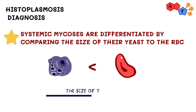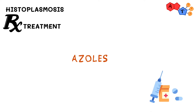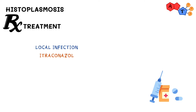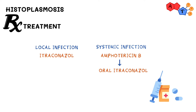For treatment of histoplasmosis: the most commonly used azole is itraconazole for local infections. For systemic infections, we give IV amphotericin B followed by oral itraconazole.